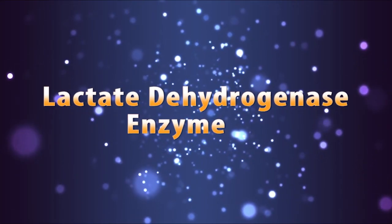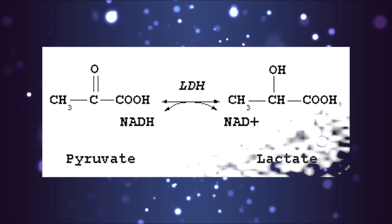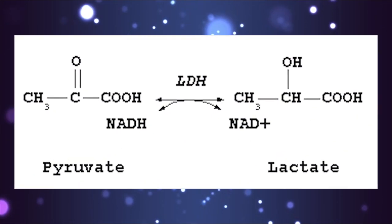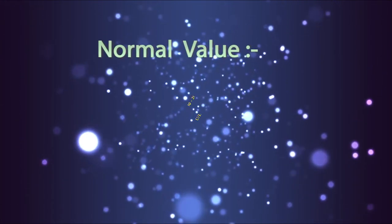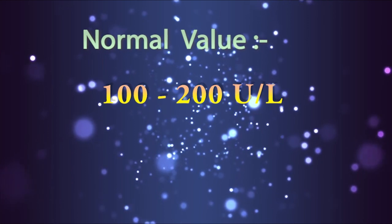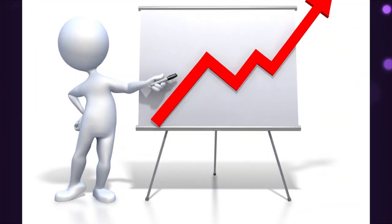Lactate dehydrogenase enzyme is important to catalyze the conversion of lactate to pyruvic acid and back. Normal value of lactate dehydrogenase in serum is 100 to 200 units per liter, but LDH value increases in children and people who do strenuous exercises.